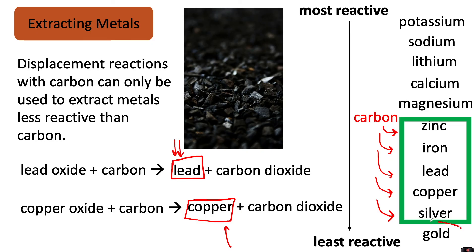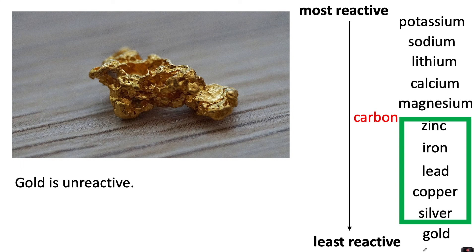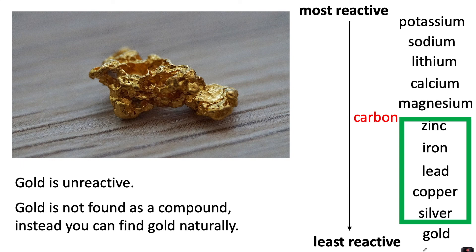Gold has been left out here because we don't need to do a displacement reaction to extract it. Gold is unreactive, so gold is not found as a compound — instead you can find gold naturally. You might have heard of people sieving for gold in rivers because the gold will be shiny and stand out, as it hasn't reacted with anything else to make a rock-like compound.